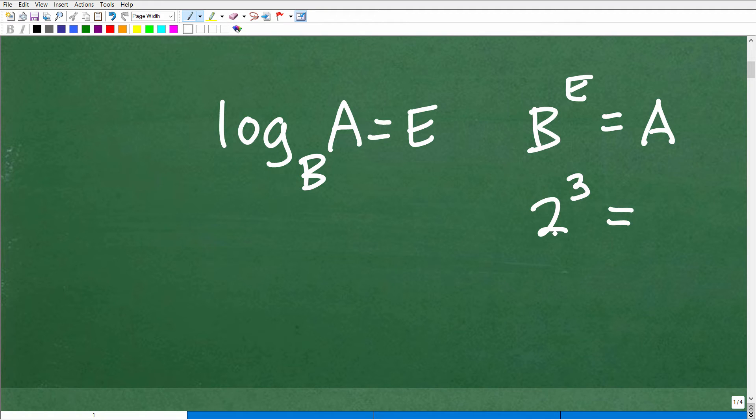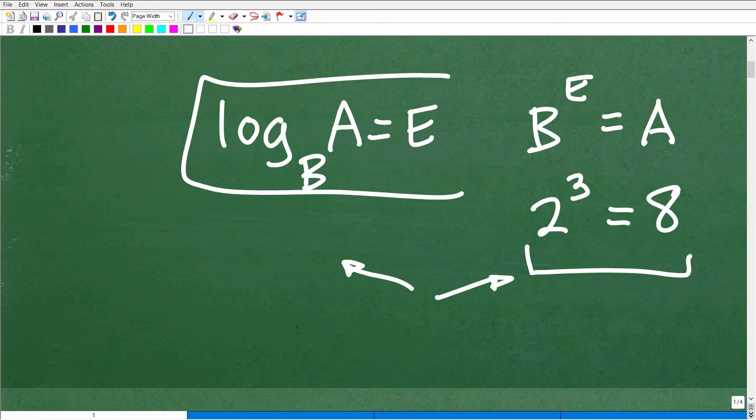So what is a logarithm? We want to be thinking of this bacon and eggs. So it's the base to the exponent is equal to the answer. So what do I mean? Well, if I have 2 to the third power, 2 times 2 times 2 is 8. So this exponential expression right here, I can express as a logarithm by thinking of it this way. Now, you heard me say bacon and eggs, B-A-E.